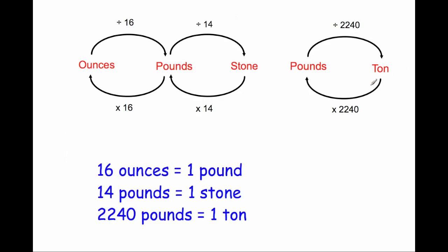There are three quite useful facts to remember. One pound is 16 ounces, one stone is 14 pounds, and one ton is 2,240 pounds.